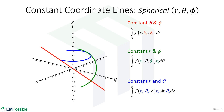Our constant coordinate lines in spherical coordinates: if we fix theta and phi and integrate only along r, we're integrating along some line through the origin. If we fix r and phi and integrate along theta, we're integrating along an arc that conforms to a sphere. If we fix r and theta and integrate only along phi, we're integrating along an arc in another plane.